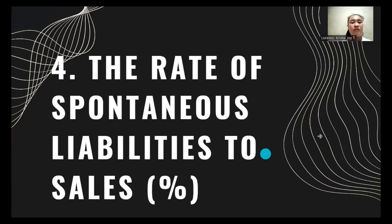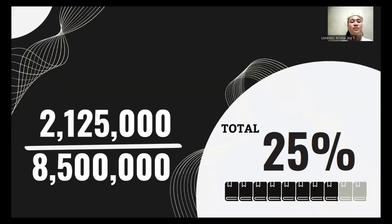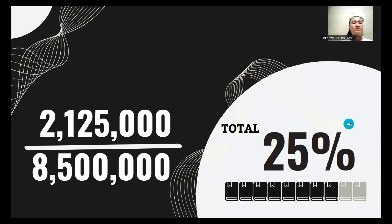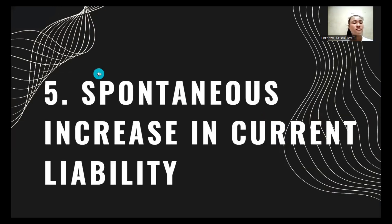Number four, the rate of spontaneous liabilities to sales. Current liabilities of 2,125,000 divided by sales of 8,500,000 equals 25%. So 25% is the rate of spontaneous liabilities to sales.